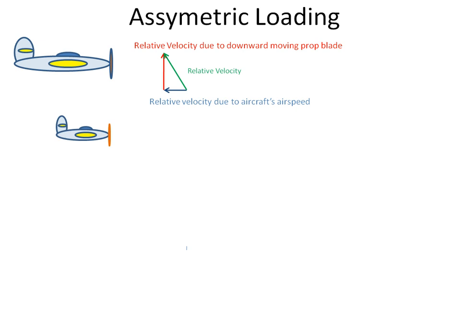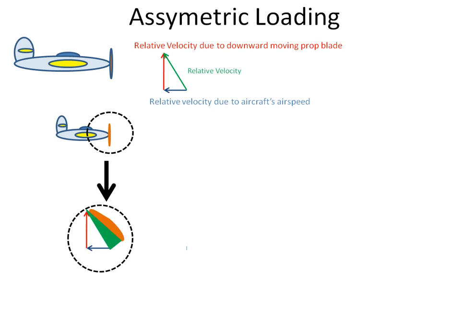Reproducing this on the diagram, there's the aircraft. Looking at the propeller, there is the vertical vector, the horizontal vector, and the resultant relative airspeed. There's the angle of attack.